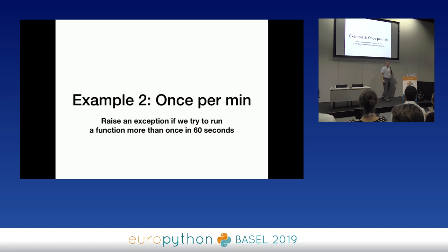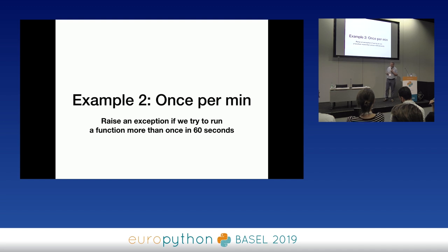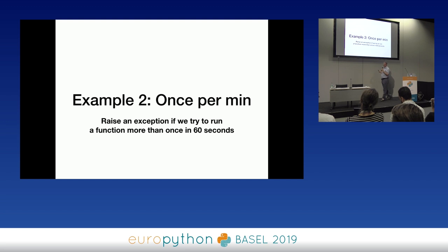Second example: rate limiting. Someone told me they had used a decorator to do rate limiting on Django requests — this is exactly the same thing minus the Django part. What we want to do is run a function but limit how often it can be run to once every 60 seconds. If it's run more than once every 60 seconds, we're going to get an exception.